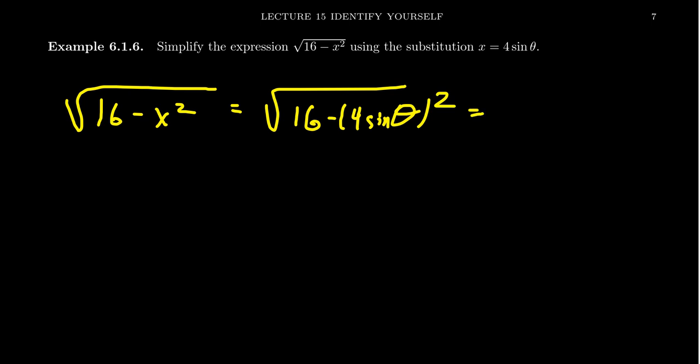So you can start to see like, okay, I can see why there's a 4 there. 4 is the square root of 16. Okay. So when you square it, you'll get two 16s which factor out. So you're going to get 16 times 1 minus sine squared theta.